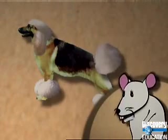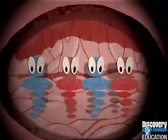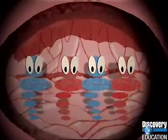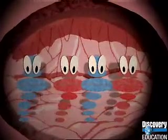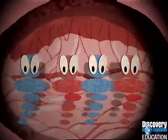Take poodles and German shepherds, for instance. You could breed them together, but would you really want to? The process of evolution can be summarized in seven words.